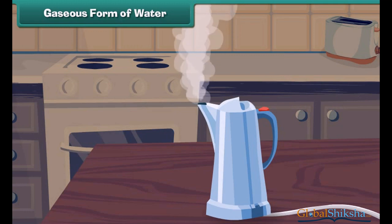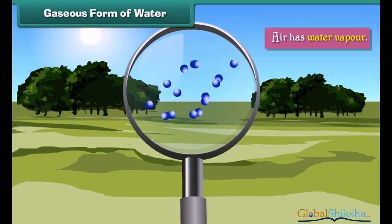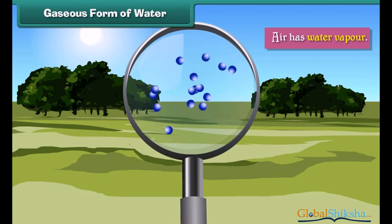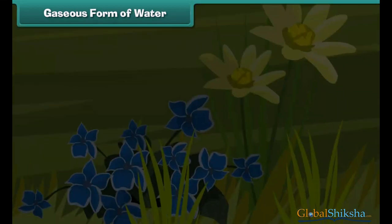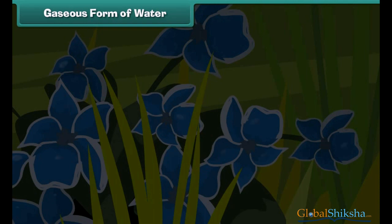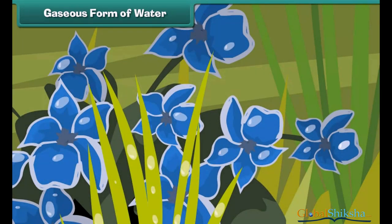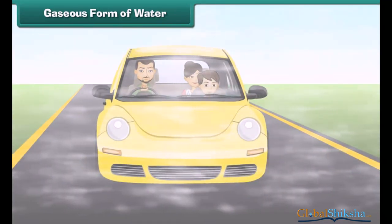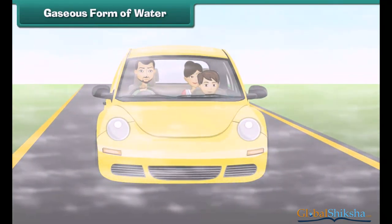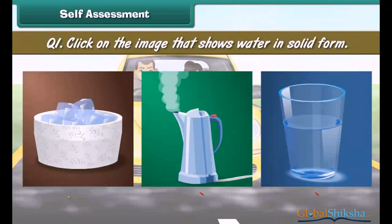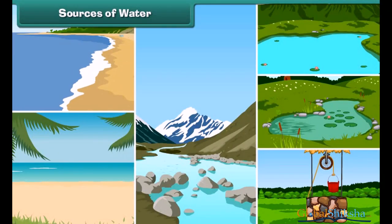When water is heated it turns into water vapour. Water vapour is an example of water in gaseous form. Water vapours are always present in the air around us. In cold nights the water vapours present in the air cool down and become water droplets called dew. We see dew drops on flowers and leaves on cold winter mornings. Sometimes during severe cold conditions these water droplets remain in the air and form fog.